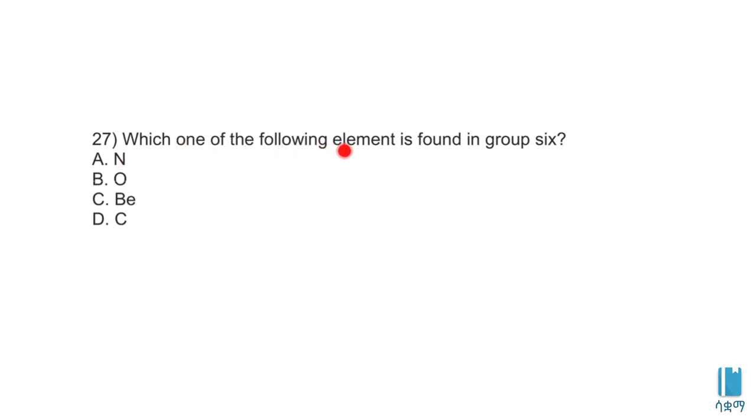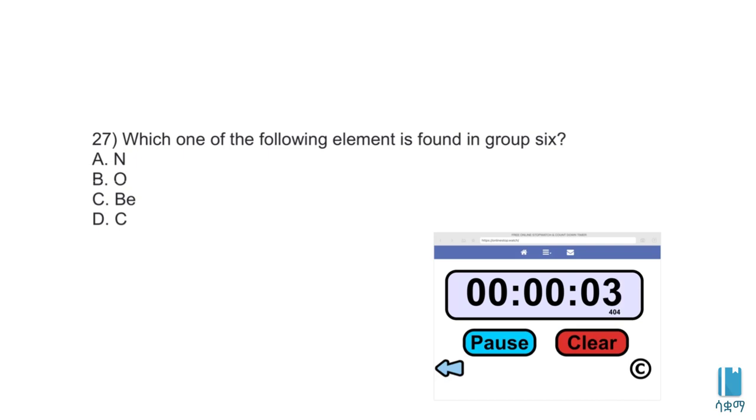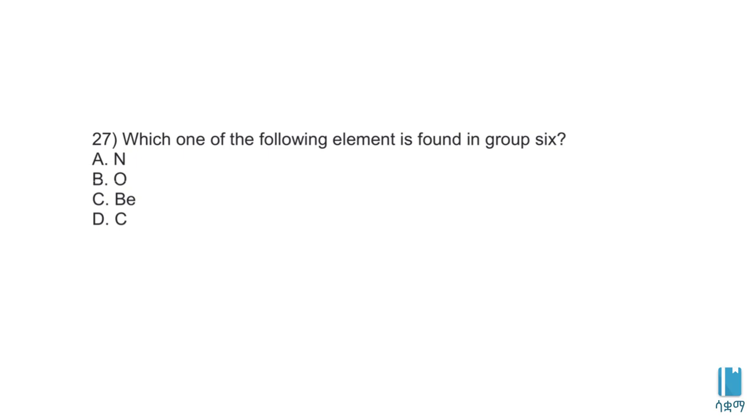Which one of the following elements is found in group 6? We need to write the electron configuration for each element. Nitrogen has atomic number 7. Oxygen has atomic number 8. Beryllium has atomic number 4.